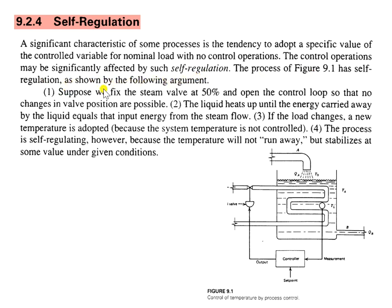For example, suppose we fix the steam valve at 50% — here is the steam valve — and we open the control loop so that no changes in valve are possible. The controller will not control the valve, so we open the connection here.